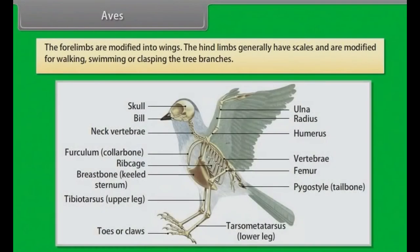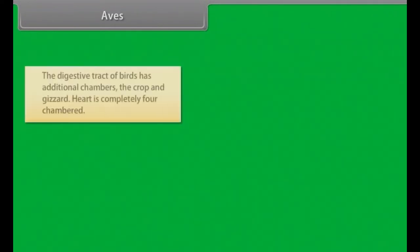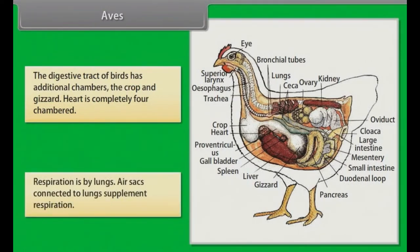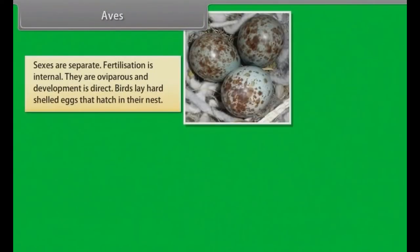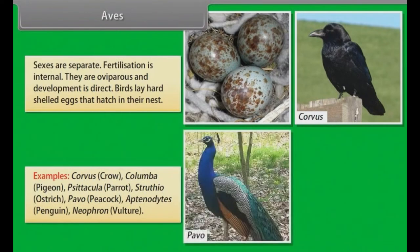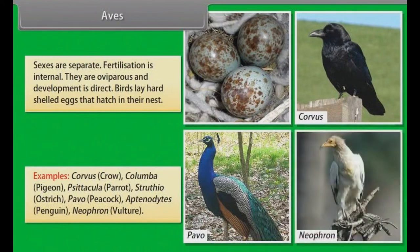The forelimbs are modified into wings. The hind limbs generally have scales and are modified for walking, swimming or clasping tree branches. The digestive tract has additional chambers — the crop and gizzard. Heart is completely four-chambered. Respiration is by lungs; air sacs connected to the lungs supplement respiration. Sexes are separate. Fertilization is internal. They are oviparous and development is direct. Birds lay hard-shelled eggs that hatch in their nest. Examples: Corvus (Crow), Columba (Pigeon), Psittacula (Parrot), Struthio (Ostrich), Pavo (Peacock), Aptenodytes (Penguin), Neophron (Vulture).